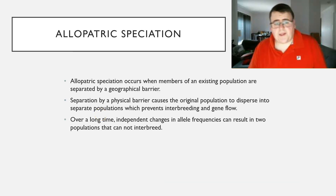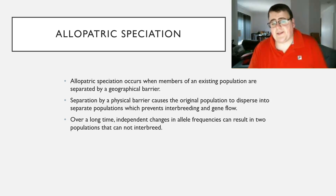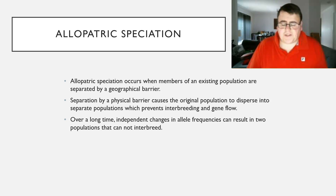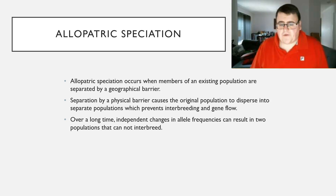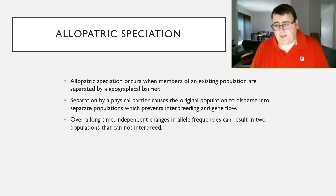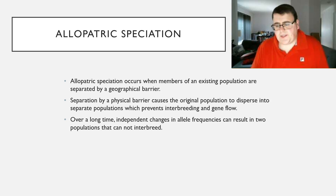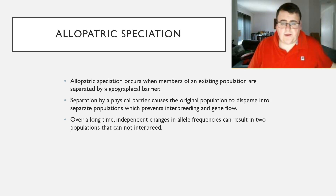There are two types of speciation. The first one is allopatric speciation. Allopatric speciation occurs when members of an existing population are separated by a geographical barrier — like a river or a mountain — so they're physically separated. That physical barrier causes the original population to split into two populations, and because they're separated by that geographical barrier they can't interbreed, meaning gene flow between those two populations is going to differ. Over a long period of time — multiple generations, not just 10 or 20 years — the independent changes in allele frequencies across those two different populations will result in them changing so much that they can no longer interbreed and they become new species.